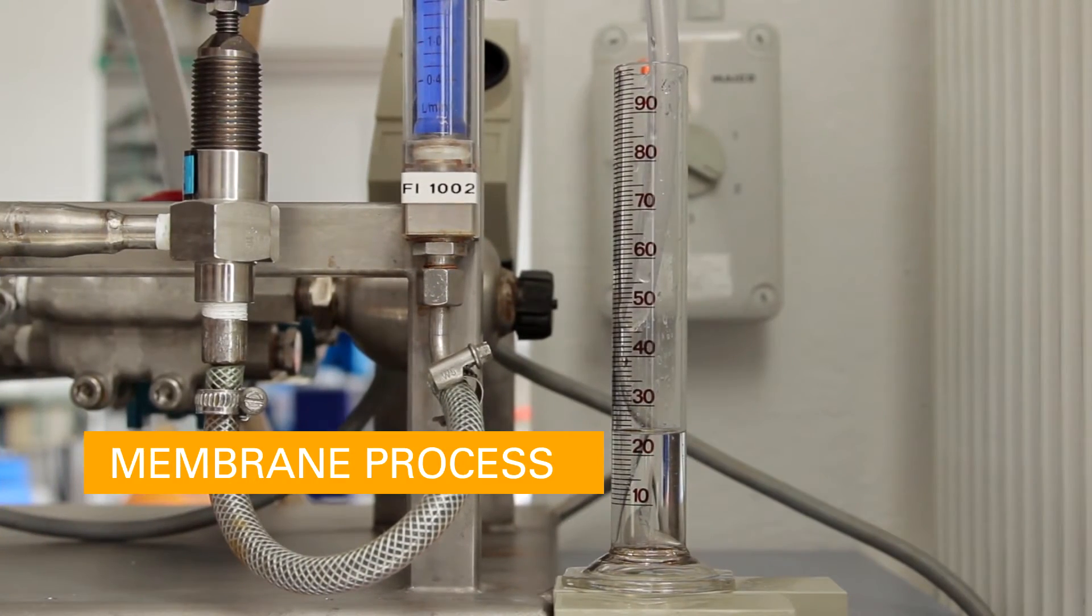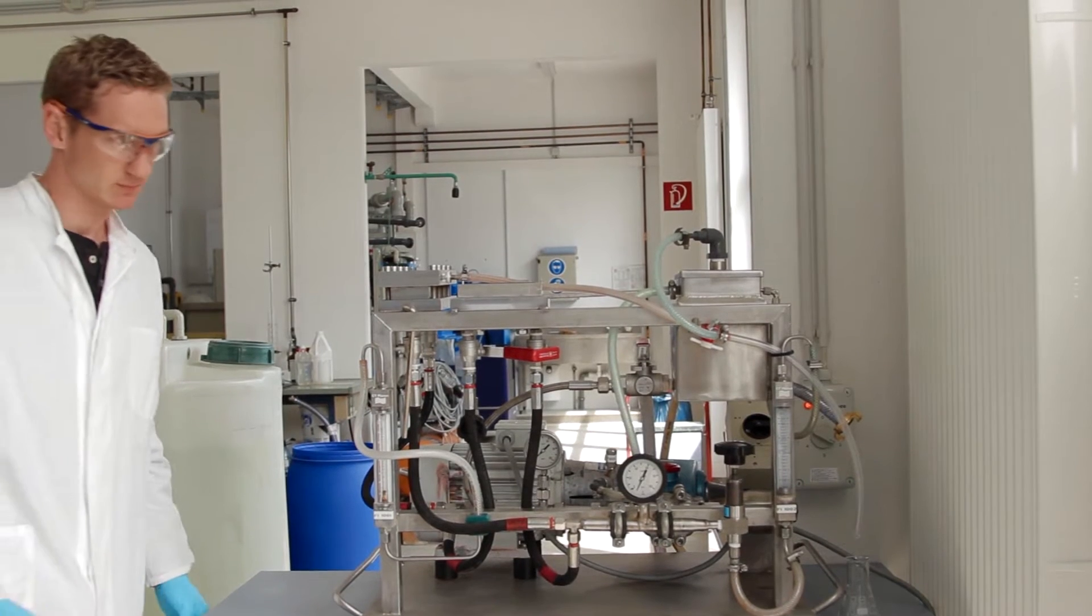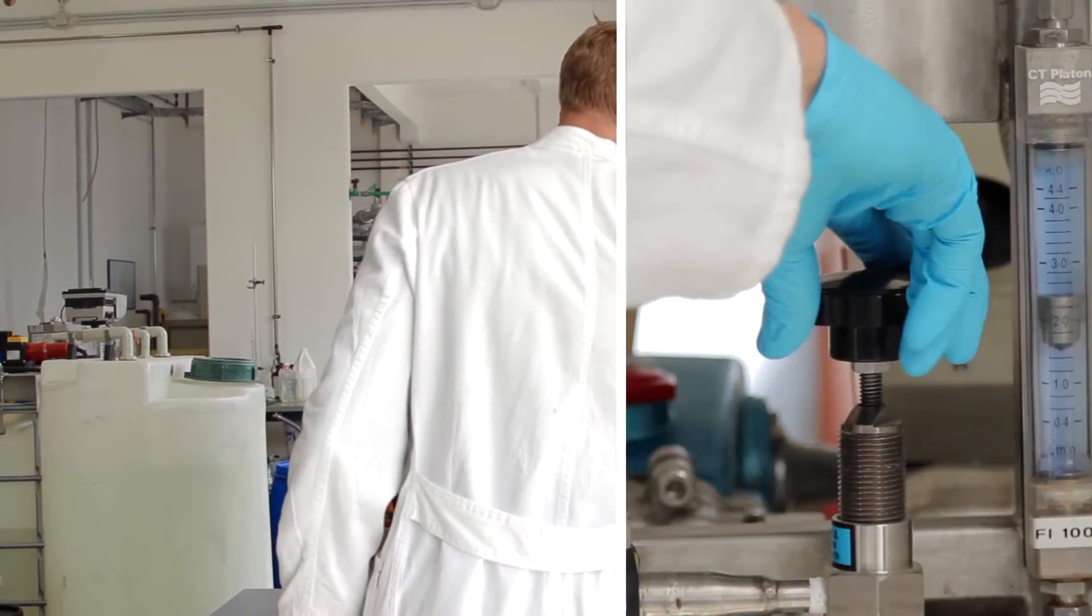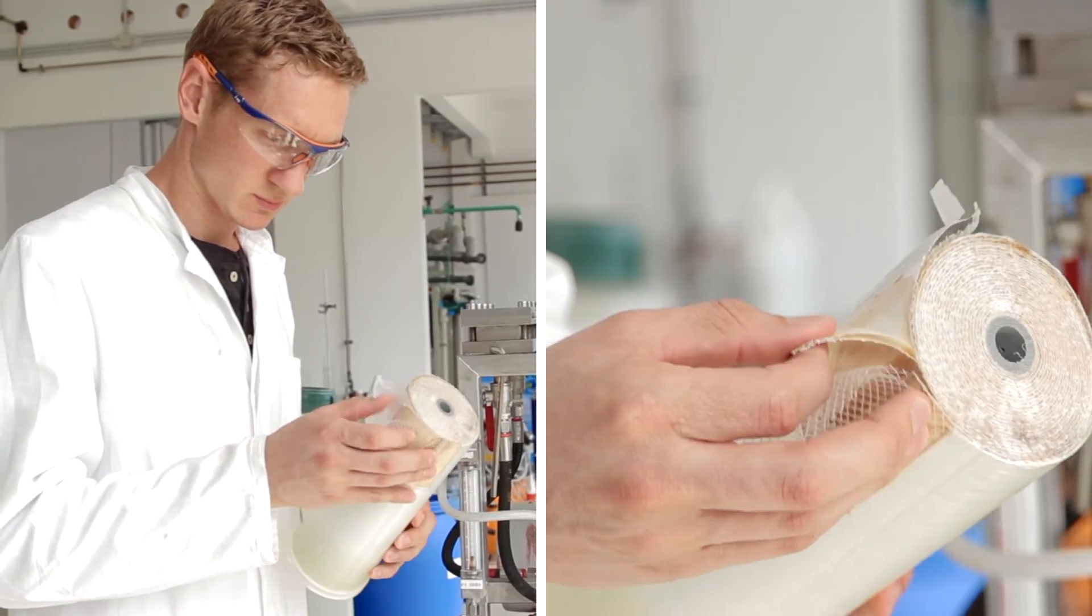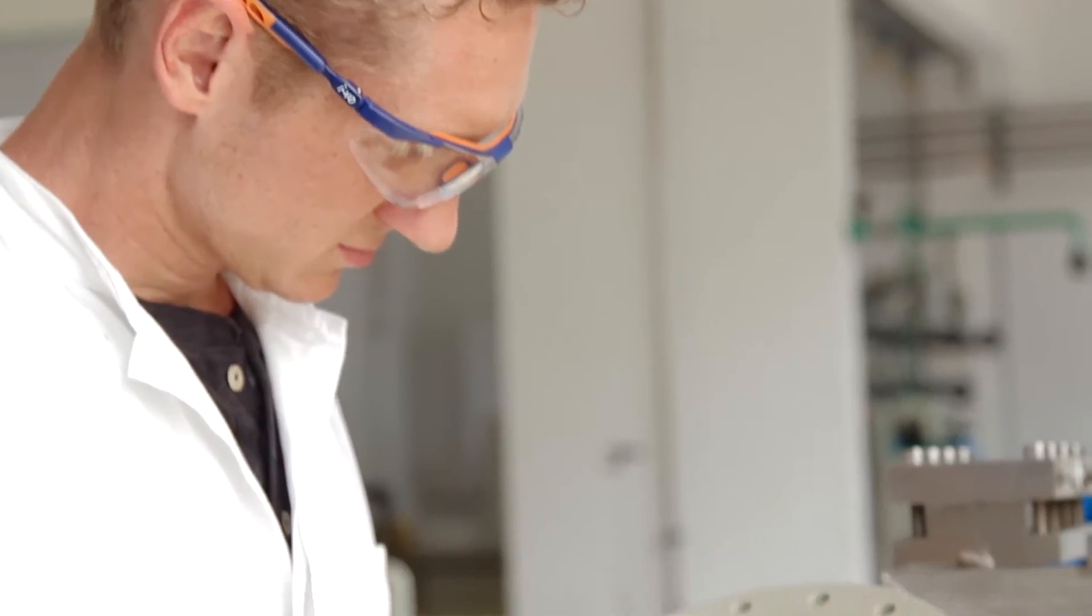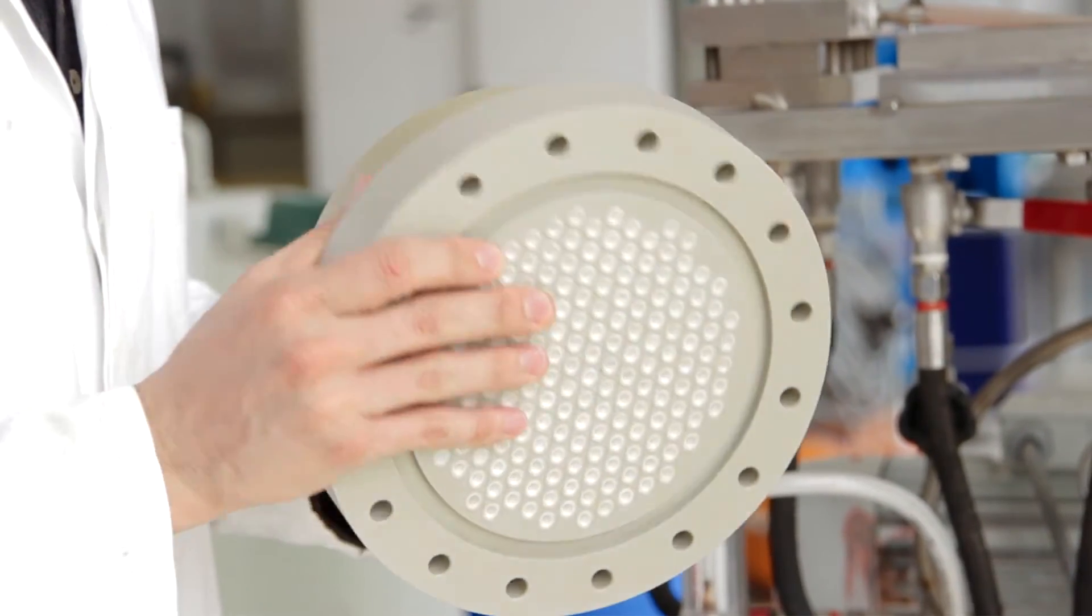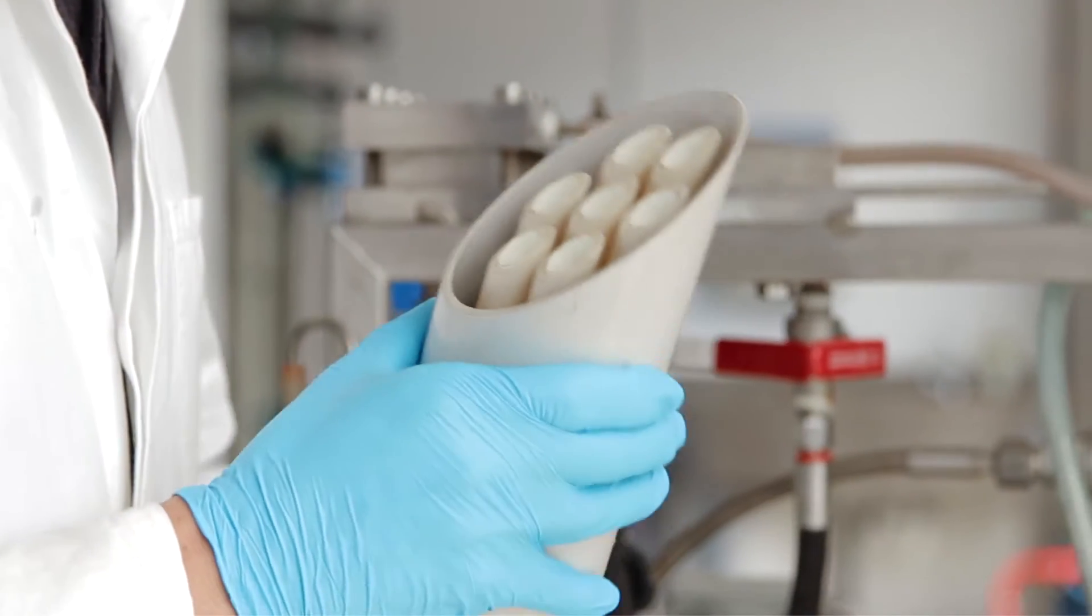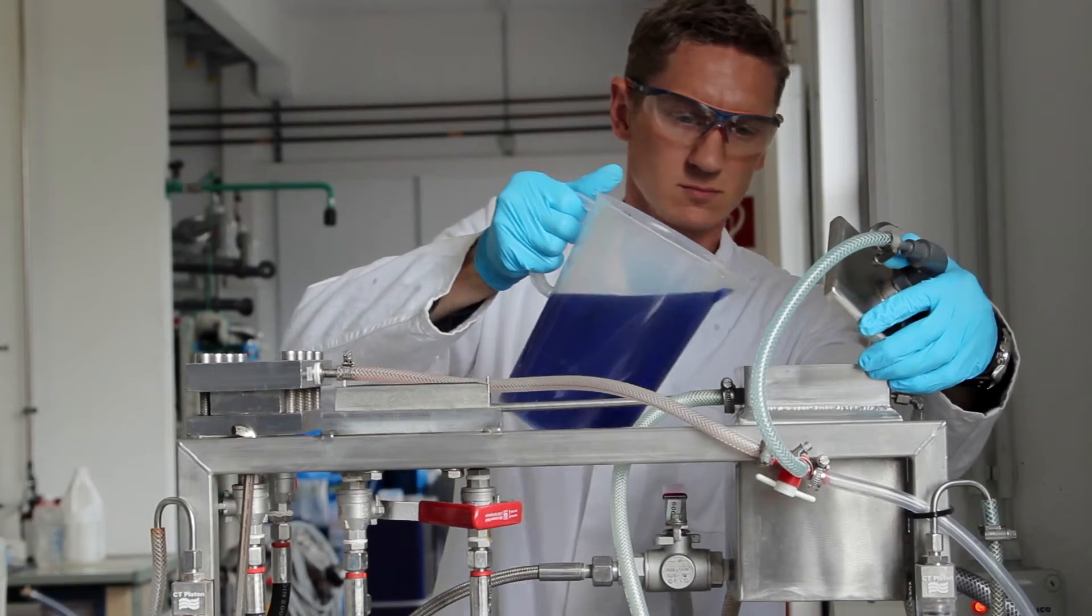Membrane process: The membrane process filters dissolved and undissolved substances out of the wastewater. The pore size of the membrane determines which molecules can pass through it. Different membranes are used in order to achieve the desired purification performance. Typical membrane processes used for water and wastewater treatment are microfiltration, ultrafiltration, nanofiltration, and reverse osmosis.